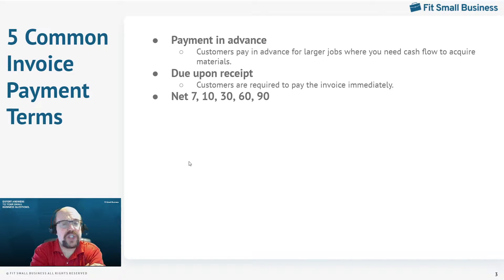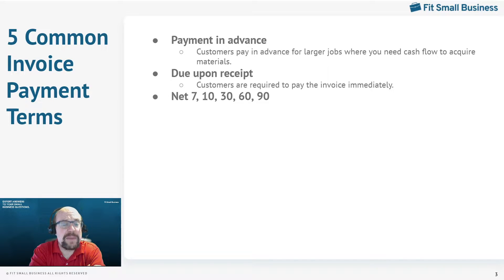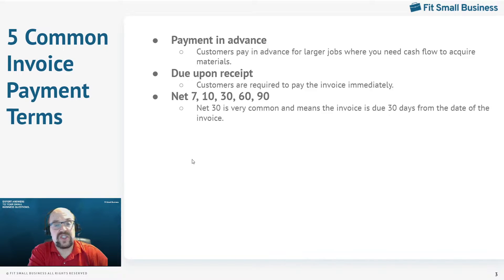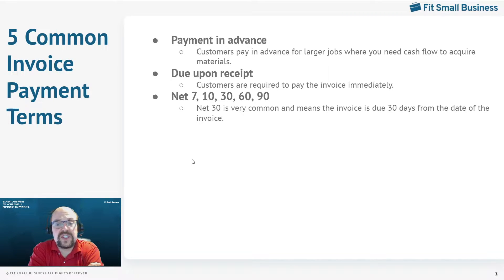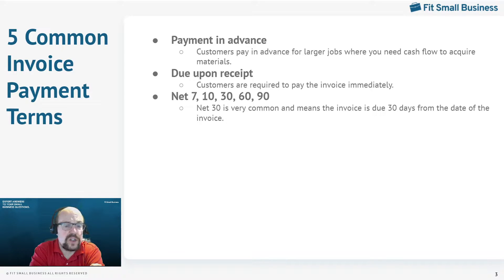Other common payment terms: net followed by a number means that payment on the invoice is due in that many days. So net 30 means the invoice is due within 30 days. That time period starts from the date of the invoice to the date that the company actually receives the check — so you have 30 days from the invoice date to get the check to the company.